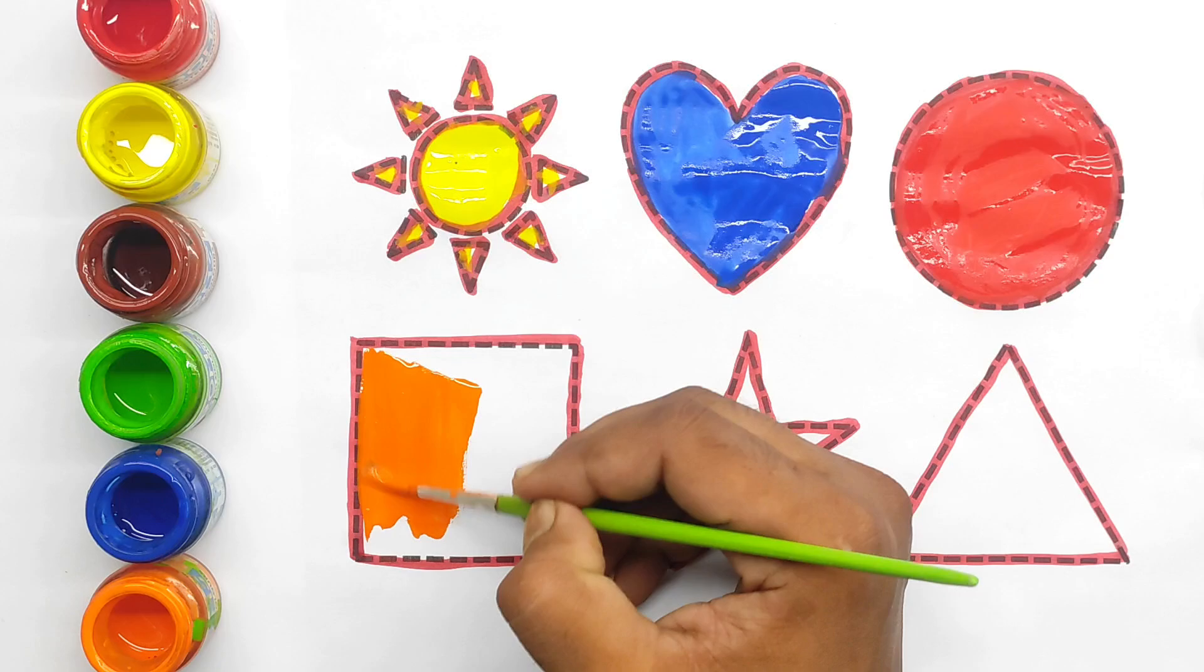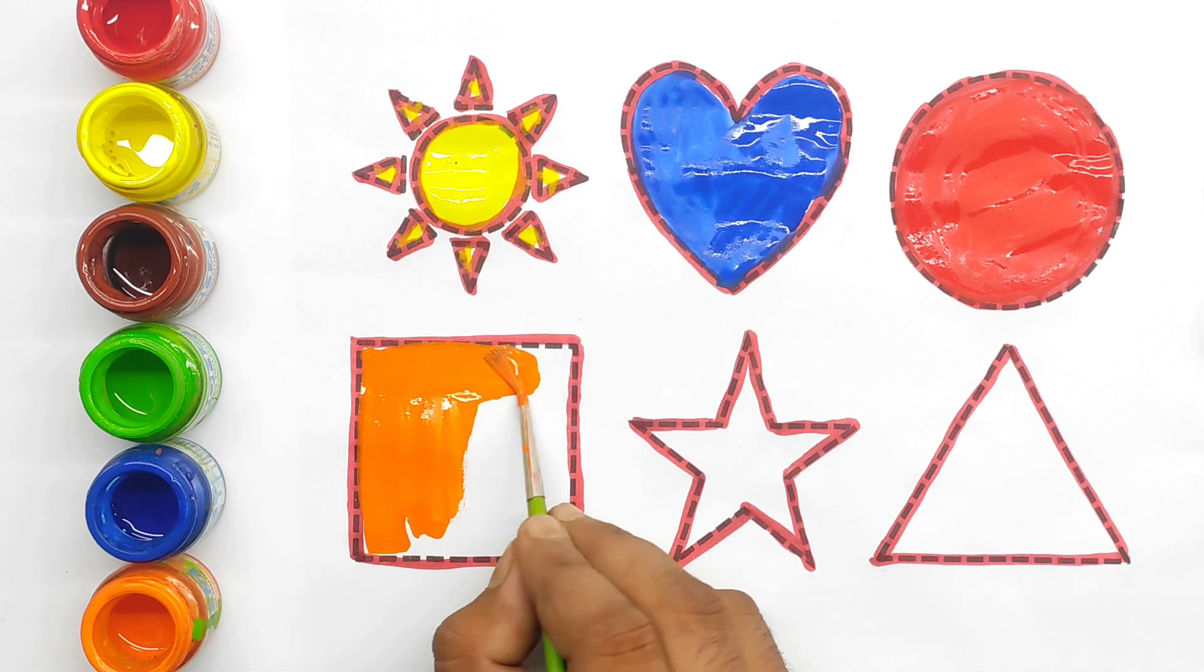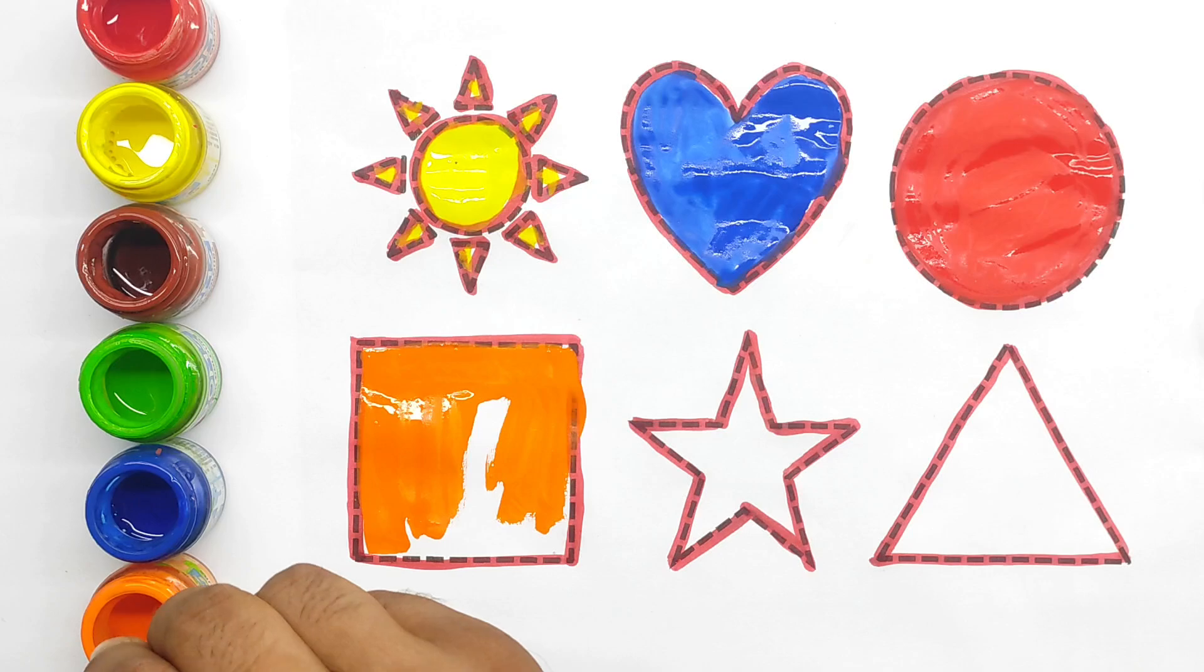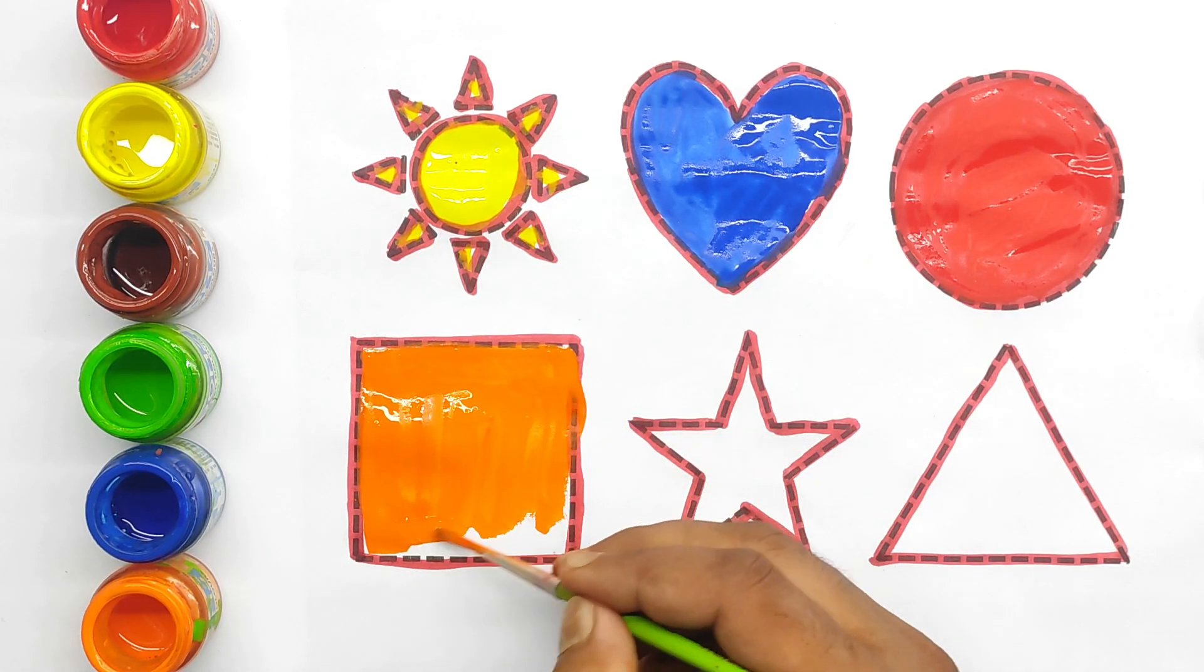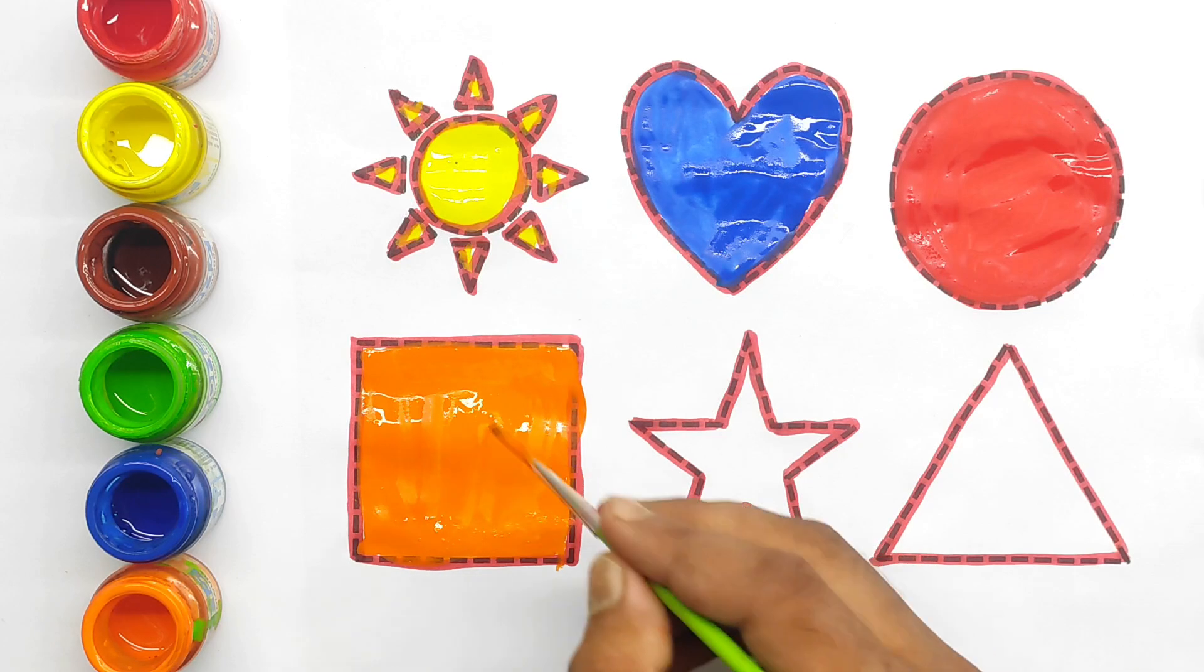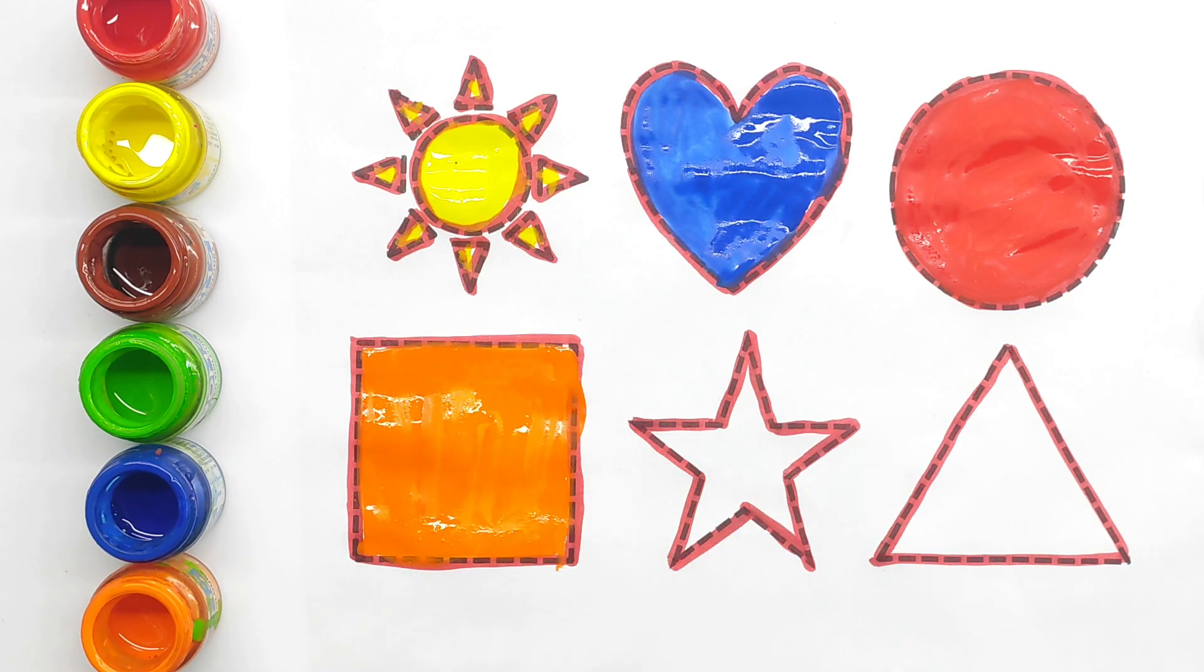Orange color. Square. This is square shape. Color fill. Orange color, green color. Fun kids. Square shape.